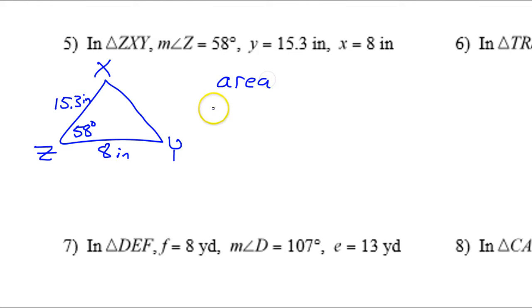This is exactly the same as all of the other problems we've been doing. So the area will be one-half 15.3 times 8 times the sine of 58. So I'm getting 51.9 square inches.